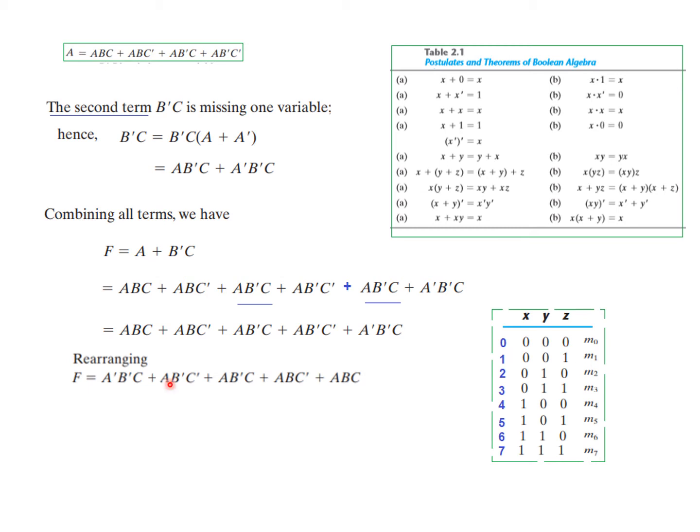This is 100, that means 4. So it is m4. 101 means 5, so m5. And 110 is 6, m6. And 111 is 7, m7. So we just plug in the values m1, m4, m5, m6, and m7.